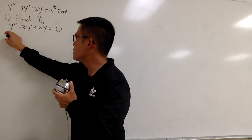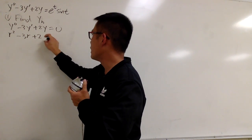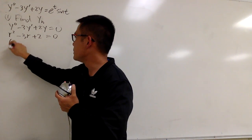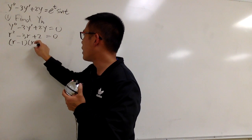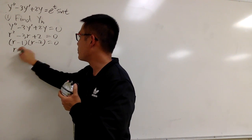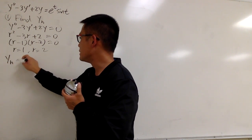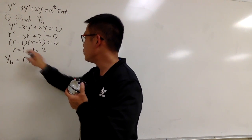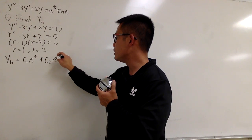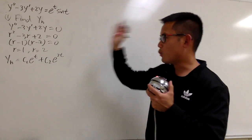So to solve this, we change this into r² minus 3r plus 2 equals zero. Factor time — this is going to be (r − 1)(r − 2) = 0, and you know r will be 1 and 2. From here, yh is going to be c₁e^t plus c₂e^(2t). So here we have the yh.